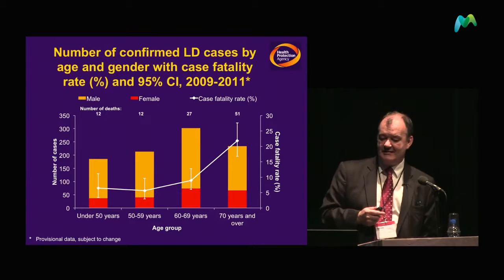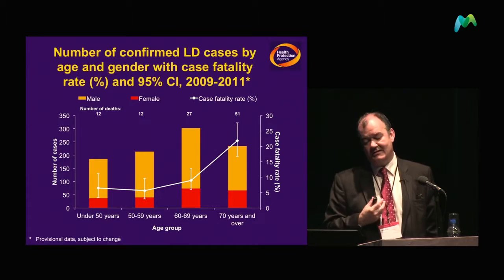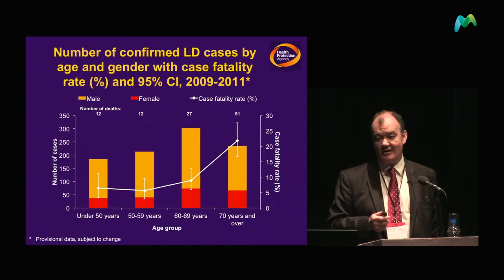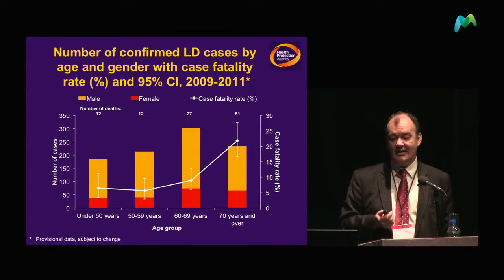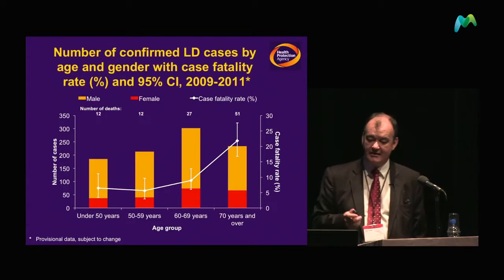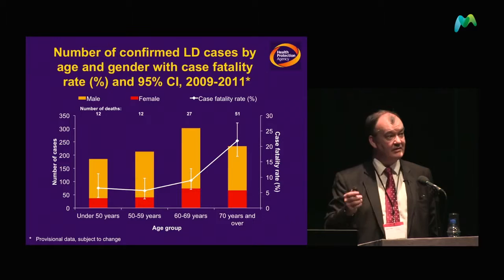Moving on to mortality — this slide demonstrates the difference between the experience of men and women. Males are diagnosed three to four times more frequently than women. Perhaps it's a behavioural thing — we know smoking is a key factor, and over time we may see women catch up as smoking works its way through the age cohort. The other thing to note is the increase in case fatality rate with age: once you get into the 70-plus age group, there's quite a significant mortality of about 20%.